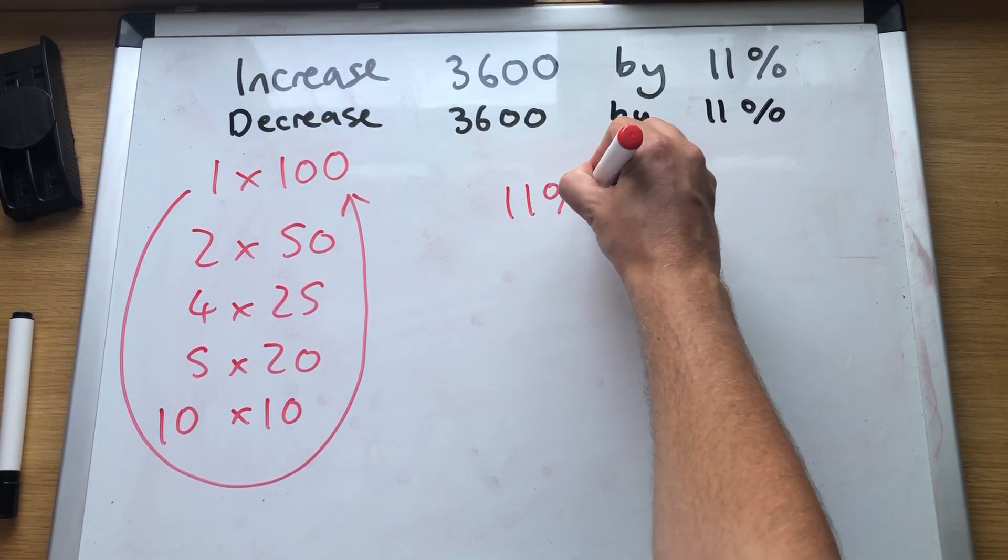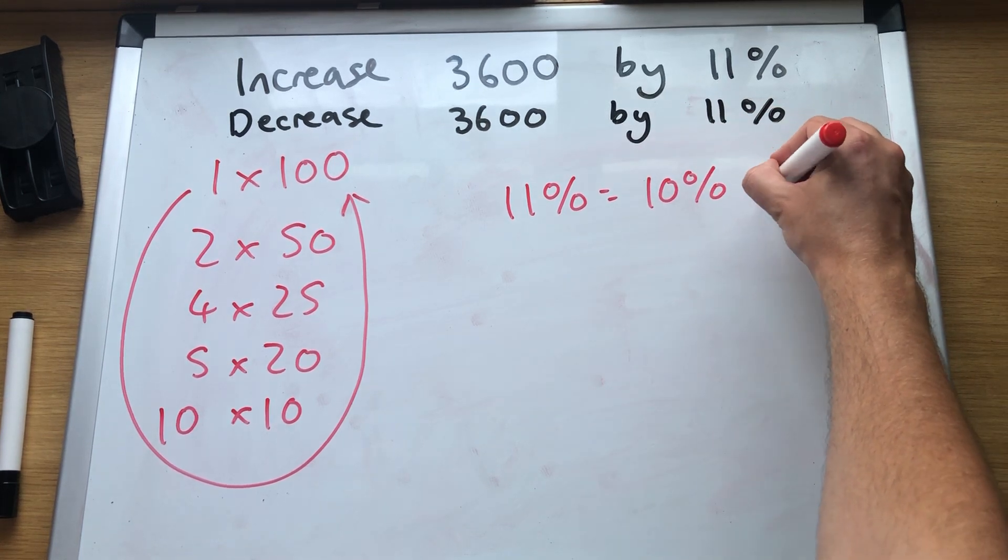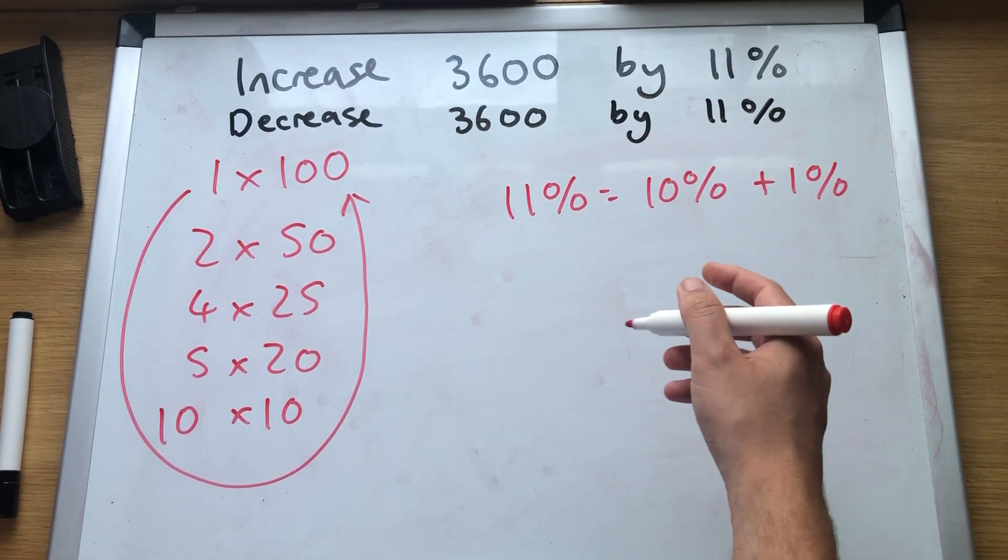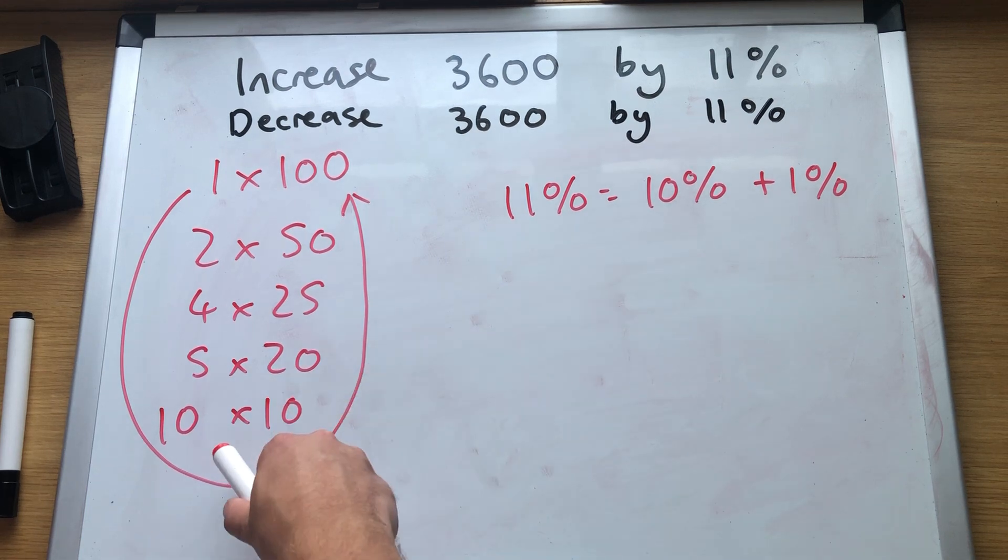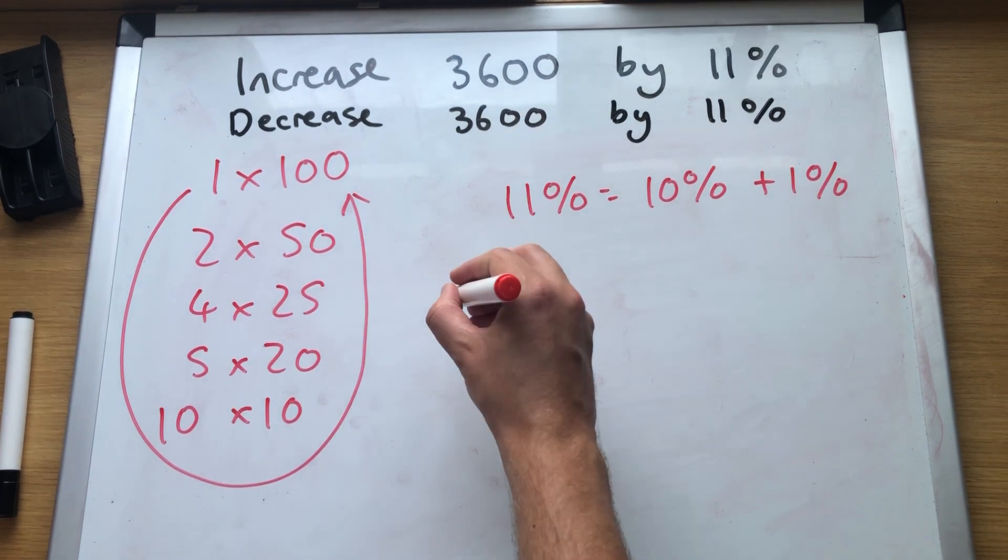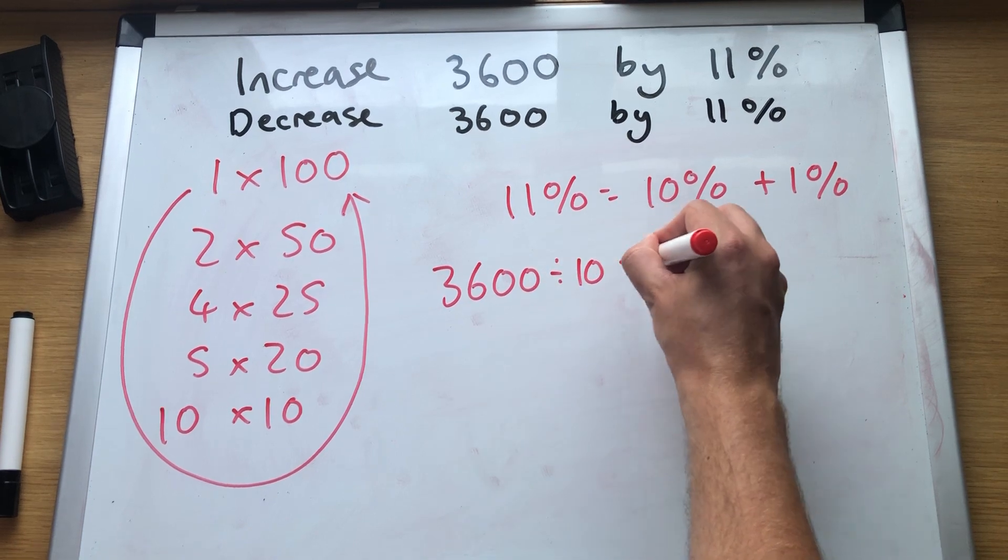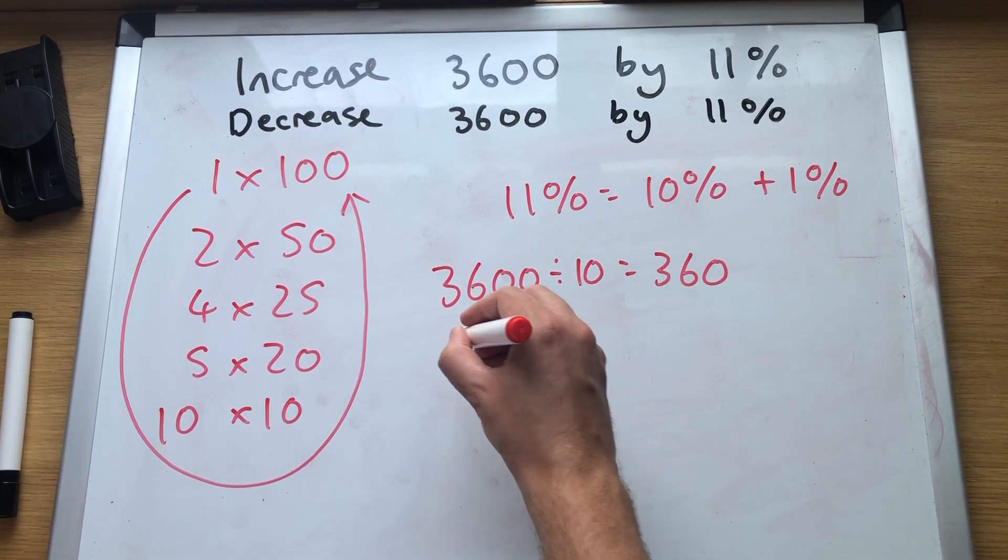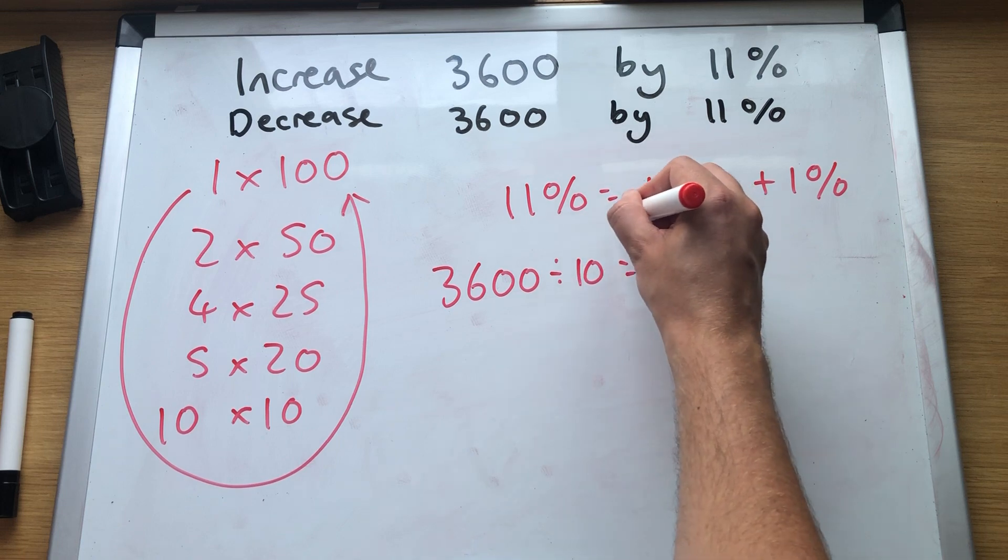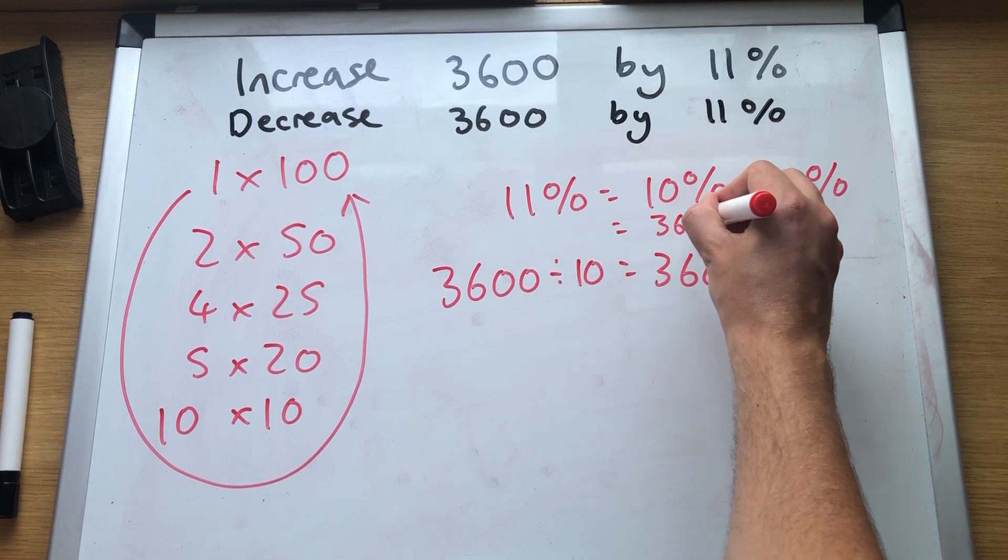11% equals 10% plus 1%. We know 10% its pair is 10. So 3600 divided by 10 equals 360. So we can say that equals 360.